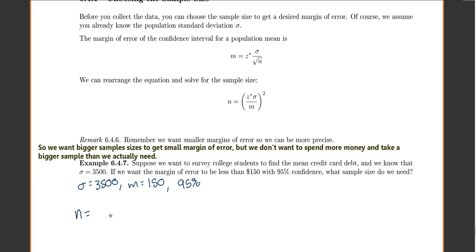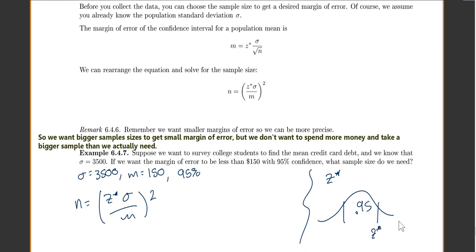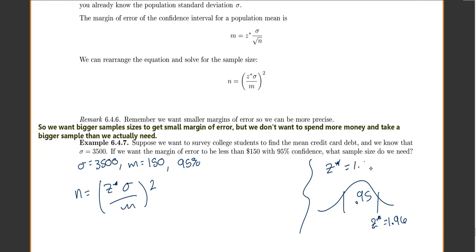We want to plug everything into our formula, n equals our critical value z star times sigma over m squared. The only thing I don't know is my z star. I need 0.95 in the middle and I need to find this z star, which I'll do using the inverse normal function. I've done 95% so often, I know that it's just going to be 1.96. So z star equals 1.96.